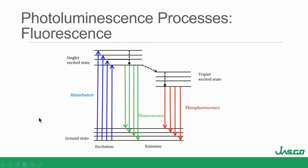Now, every spectroscopist likes to show the Jablonski diagram. We have a ground state and a singlet excited state. In any molecule there are lots of vibrational levels. In the blue, we can see the absorption process where the molecule is excited from the ground state to the first singlet excited state. There are lots of vibrational levels to excite to, so it tends to be very broad. If the molecule does not relax non-radiatively, but takes that absorbed light, loses some as heat to reach the first level of the first excited state, it can decay by giving off photons to vibrational levels in the ground state — and this is fluorescence.